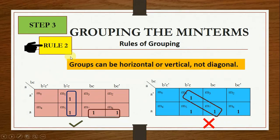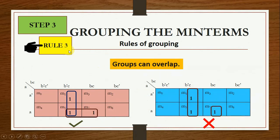Rule 2: groups can be horizontal or vertical but they cannot be diagonal. In a valid KMAP one group is vertical and one group is horizontal — that is correct. If groups are placed diagonally, that is wrong. Rule 3: groups can overlap. Two groups may share a cell — that is correct. However, grouping in a way that does not give the minimized expression is wrong.